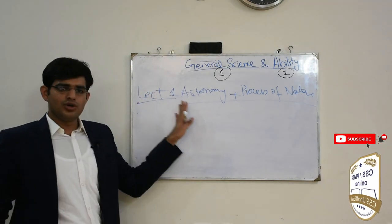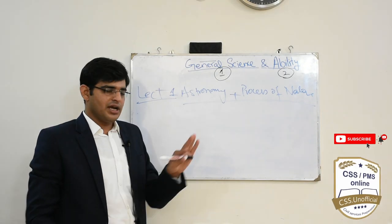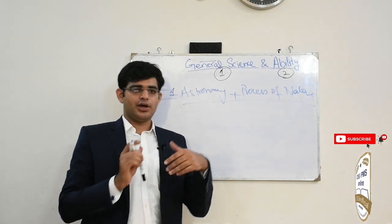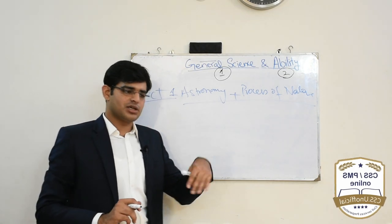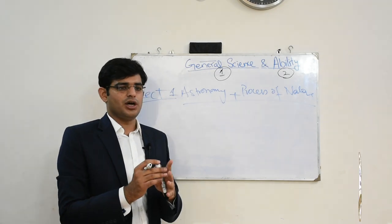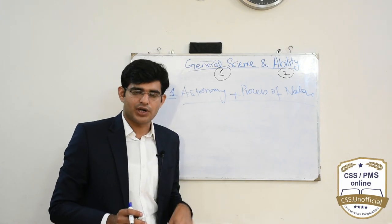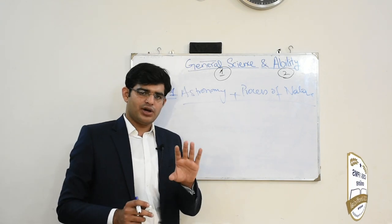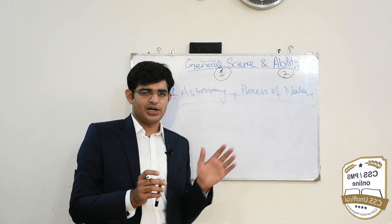Lecture 1 میں ہم universe کیا ہے، کس طرح بنی، Big Bang theory، galaxies، ہماری Milky Way galaxy، اور solar system کا introduction پڑھیں گے۔ Solar system میں جو continuous processes چل رہے ہیں جیسے solar eclipse، lunar eclipse، weather variation، اور day-night کی changing — ان کی scientific basis پڑھیں گے۔